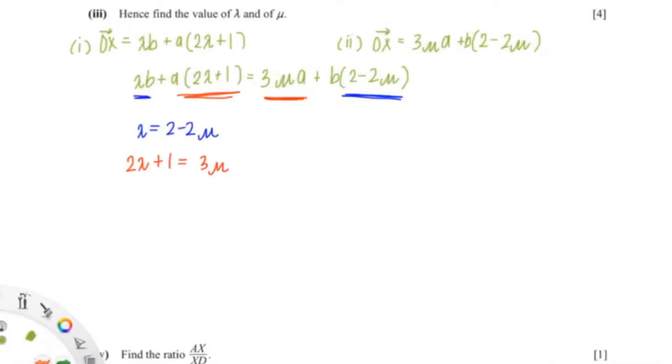So now I'm just going to substitute the lambda into the red equation or the second equation. So substitute equation 1 into equation 2. That would be 2 bracket 2 minus 2 mu plus 1 equals to 3 mu. Now we're going to expand it. So that would be 4 minus 4 mu plus 1 equals to 3 mu.